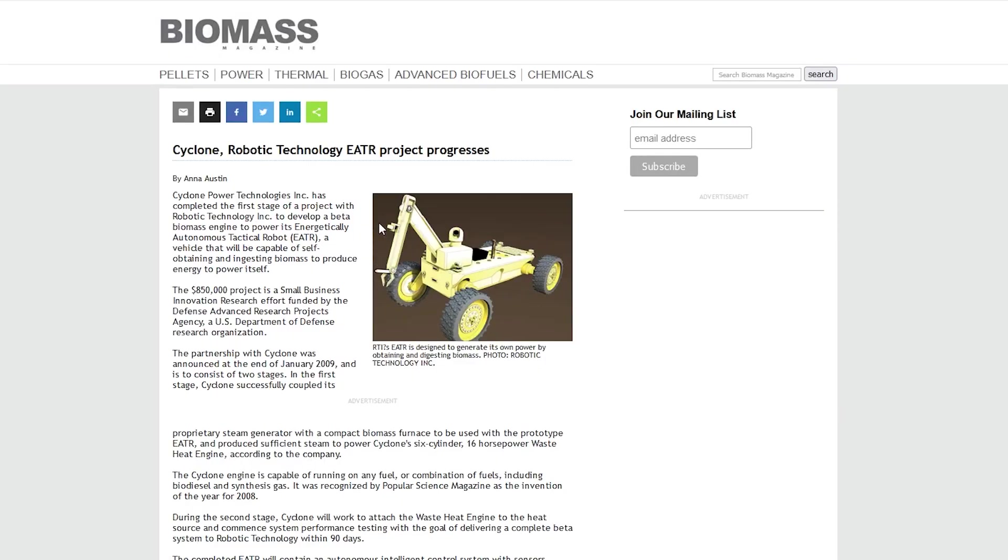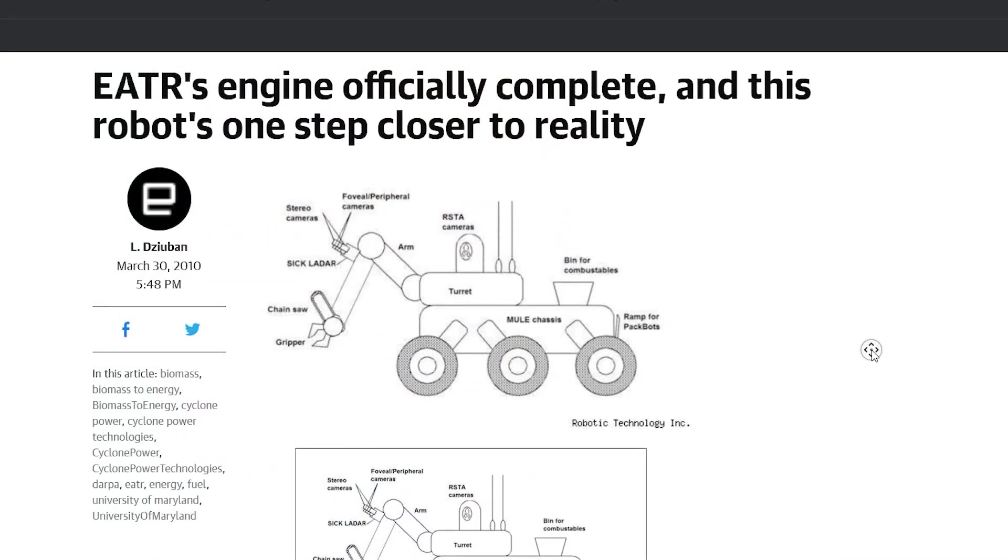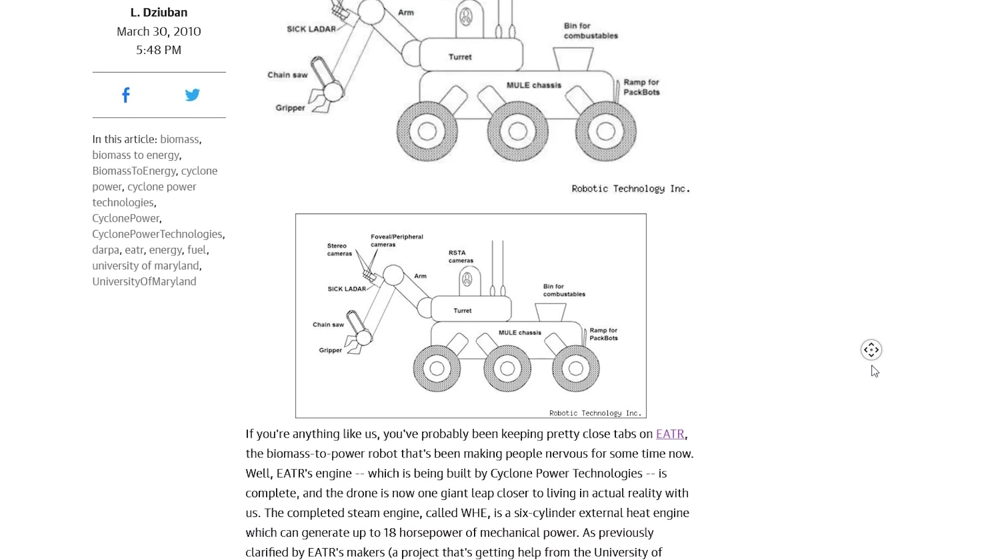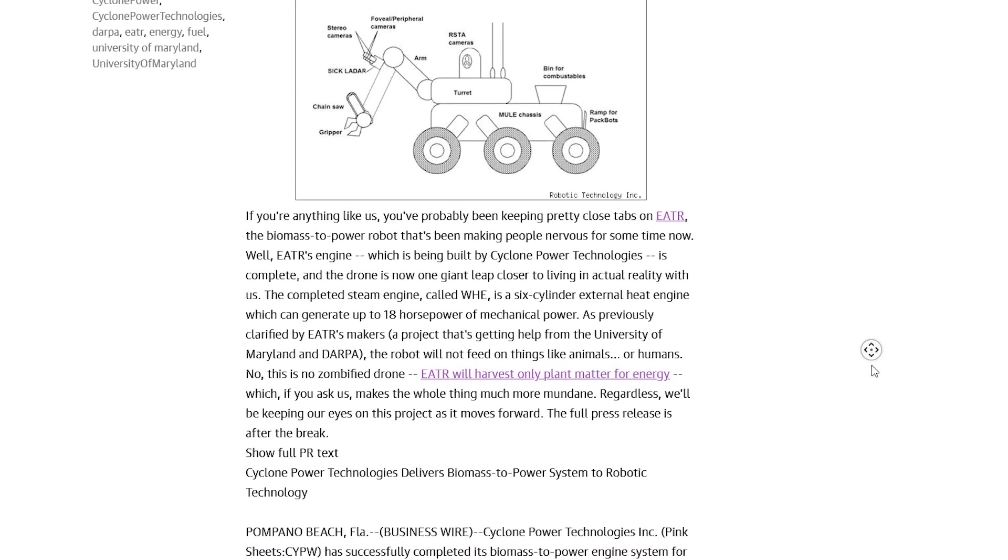Next, the Eater. Yet another awesome concept by Cyclone Power. The Eater is designed to generate its own power by obtaining and digesting biomass. So it's like a little car that feeds itself biomass which it uses to drive. Awesome idea.